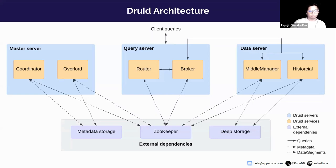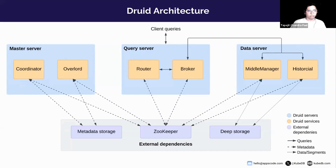The master server manages data ingestion and availability, and is responsible for starting new ingestion jobs. The coordinator watches over the historical services on the data servers and is responsible for assigning segments — since Druid stores data in partitioned segments — loading them into historical nodes. The overlord watches over the middle managers and manages the whole ingestion process, assigning ingestion tasks and coordinating segment publishing.